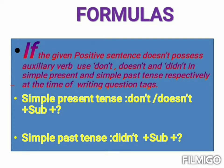Dear students, keep it in mind — here we discuss about positive sentences. If the given sentence is positive and it is in simple present tense form, then our formula is: don't or doesn't + subject + question mark. If the sentence is in positive form and it is in simple past tense form, then our formula is: didn't + subject + question mark.